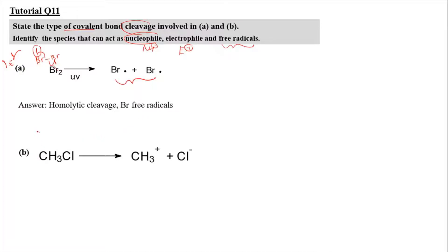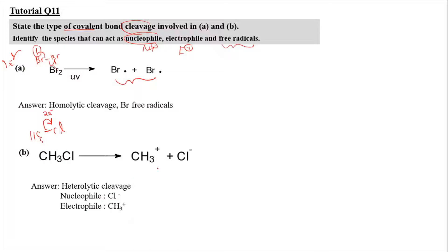For part B, we have CH₃ with Cl. As you can see, Cl is more electronegative than carbon, so it's going to be a heterolytic cleavage where both electrons are transferred into the chlorine atom. This is denoted by a full-headed arrow, which refers to the transfer of two electrons. The type of bond cleavage here is heterolytic cleavage. The nucleophile is chlorine because it receives two electrons, and the electrophile is CH₃⁺ where it receives no electrons. The species with more electrons is negative and hence is the nucleophile, and the one that gets no electrons is positive, which is the electrophile.